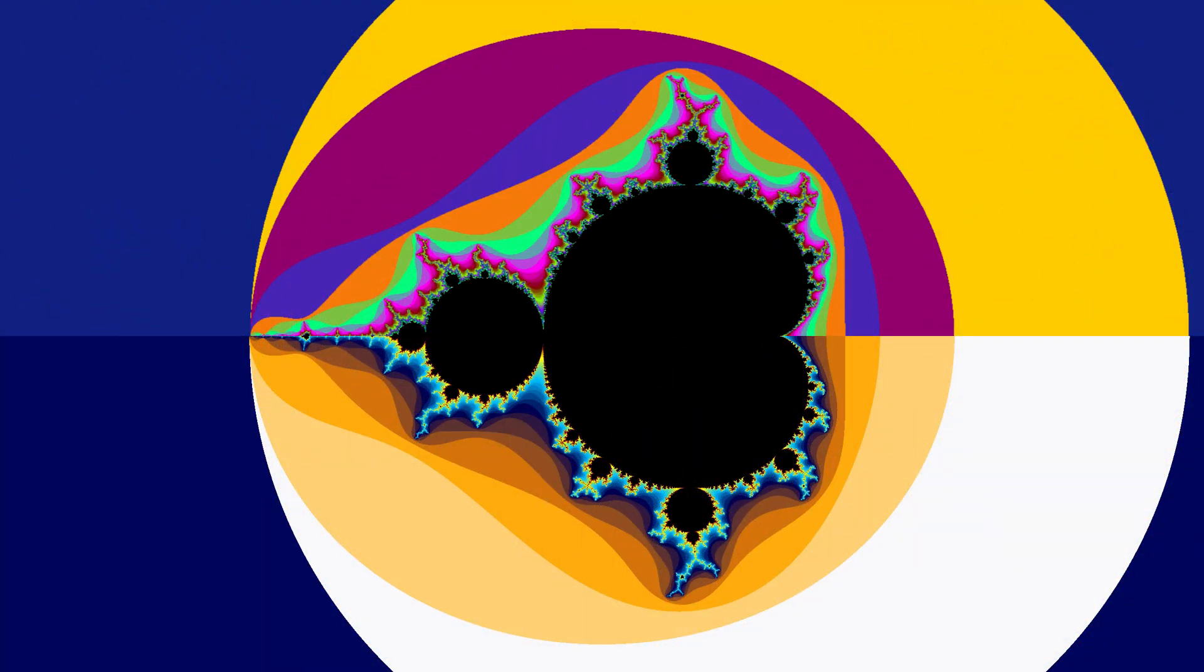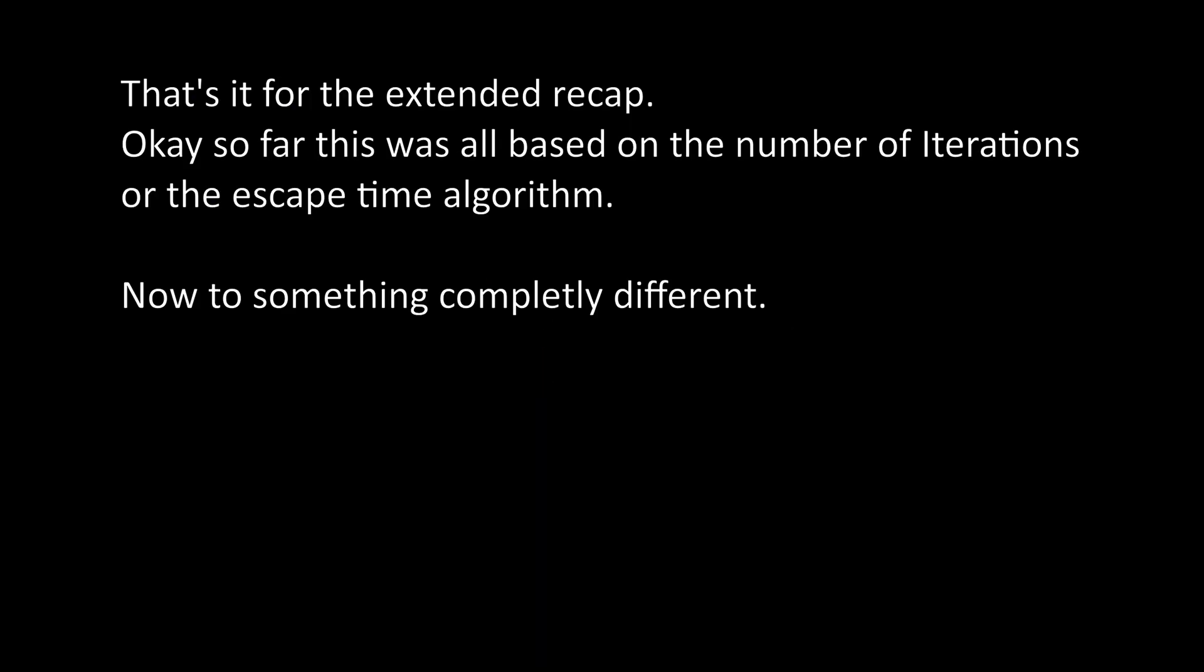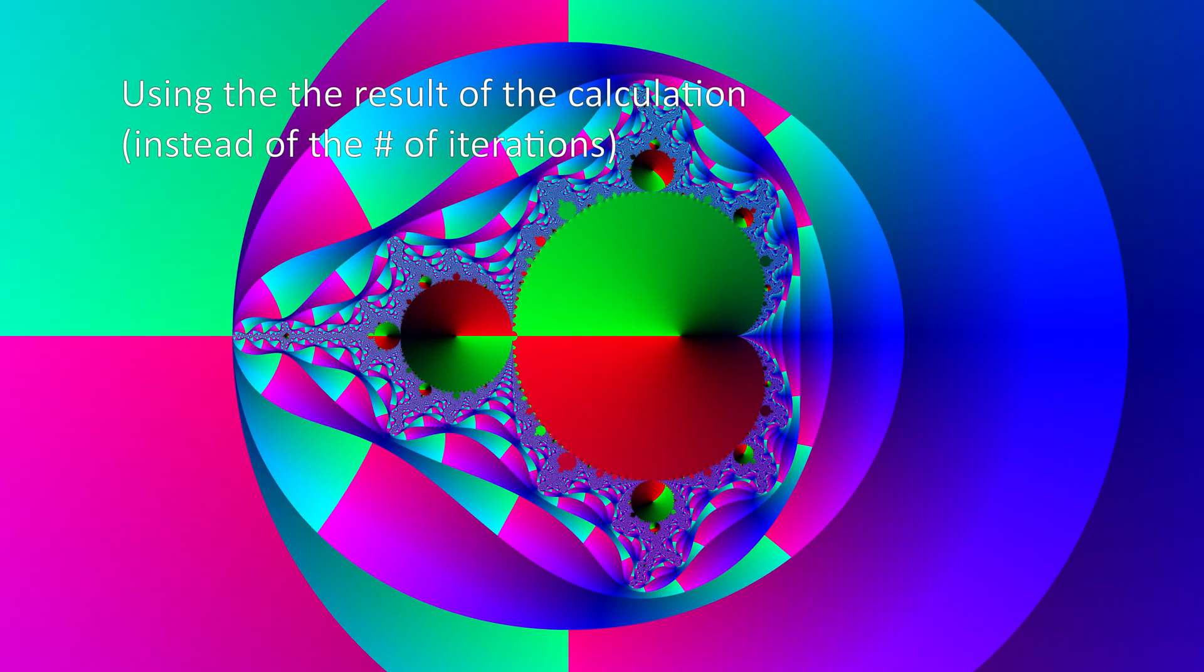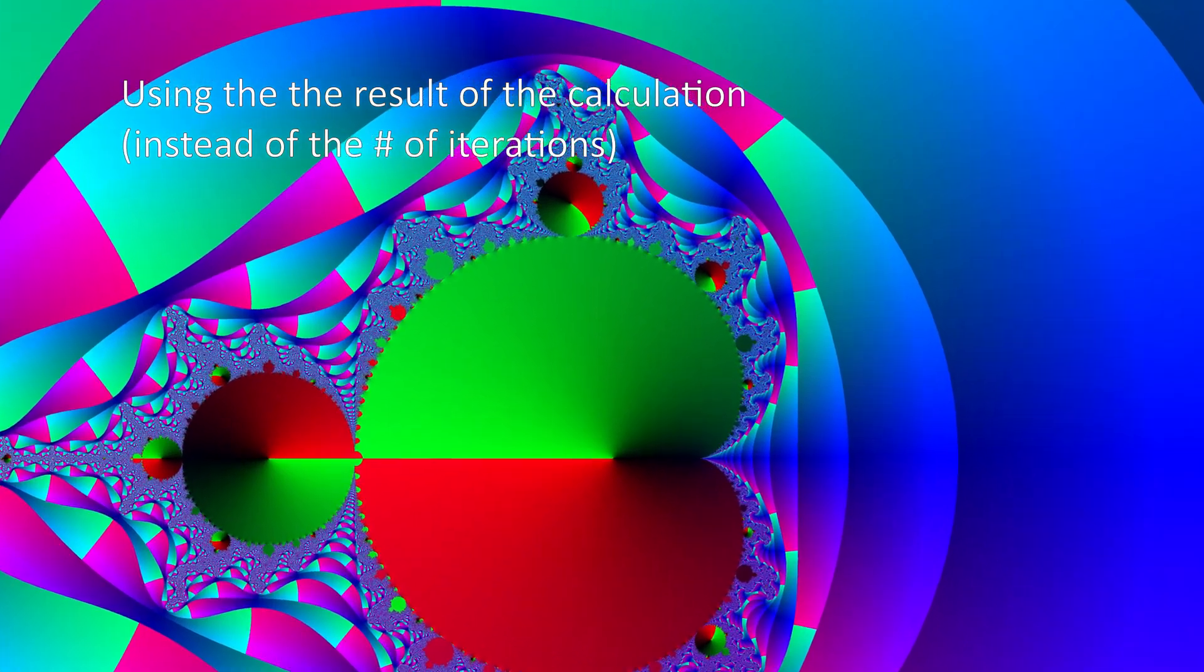Let's zoom out again and move to something new. The first one I would like to present has been colored according to the phase and value of the result of the last calculation. Blue represents the value, green positive angles, and red negative angles.